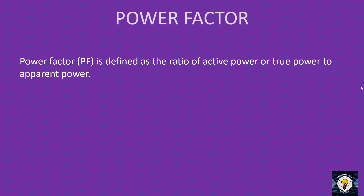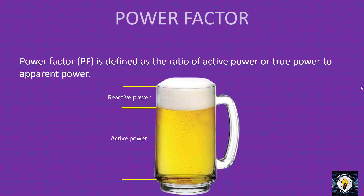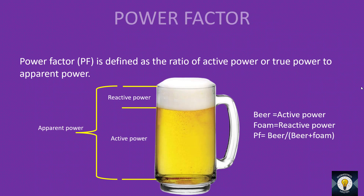The power factor is defined as the ratio of active power or true power to the apparent power. We can understand this in a simple way — this is called the beer and mug analogy. Consider a mug of beer: the true beer content represents active power, the foam represents reactive power, and the total content — beer plus foam — represents apparent power. So power factor is defined as beer divided by beer plus foam, or active power divided by apparent power.